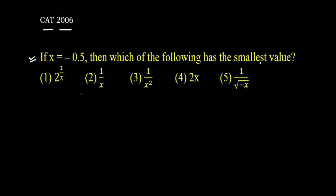Okay, we have to find the smallest value. Since x is equal to minus 0.5, this value should always be positive. Raised to power anything could always be a positive number.